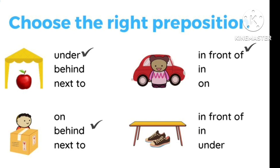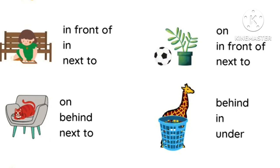Shoes kahan par hai — neeche hai, table ke. Toh neeche ko hum bolte hai — shoes are under the table, toh 'under' ko hum tick karenge. Girl is sitting next to the bench — bench se wo touch hoke baithi hai, toh hum likhenge 'next to'. Cat is on the chair — chair ke upar hai, toh hum kya bolte hai: 'on'. Ball ya plant ki position — ek doosre ke saamne hai. Saamne ko kya bolte hai — 'in front of'. Ball is in front of the plant, so correct option is 'in front of'.